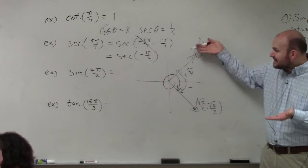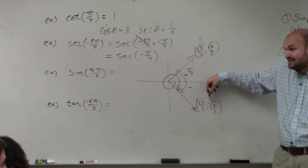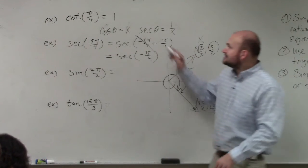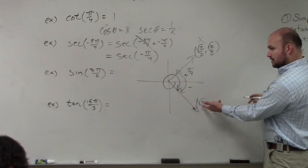If I'm doing negative, that's just the reflection over the x-axis. So it's the same coordinate point except y is negative. However, I'm trying to figure out what secant is. Secant is 1 over x. What is the x-coordinate of this angle? √2/2.